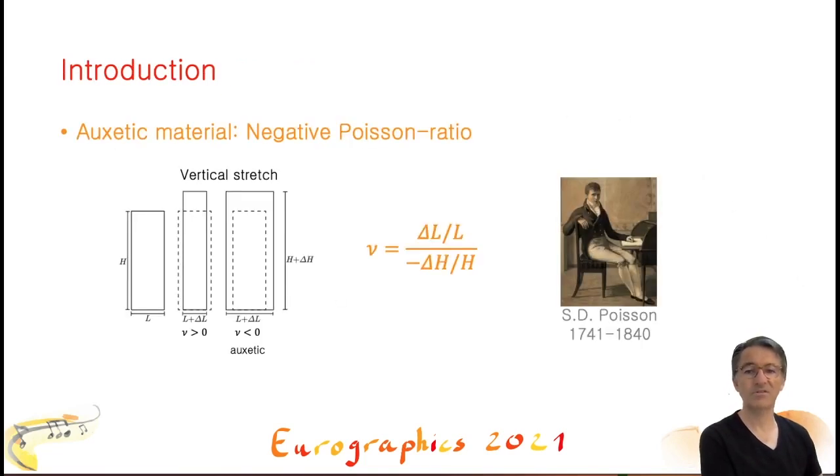Let us define first what is an auxetic material. Look at the rectangle to the left, made from some material. Suppose you stretch it vertically. For most materials, it will shrink in the transverse horizontal direction. The ratio of relative longitudinal stretching divided by relative horizontal shrinking is positive in this case. It is denoted with the Greek letter ν (nu). ν is called the Poisson ratio, from the mathematician Siméon Denis Poisson, born in a small town of Pithiviers in 1741. Auxetic materials are defined by their negative Poisson ratio.